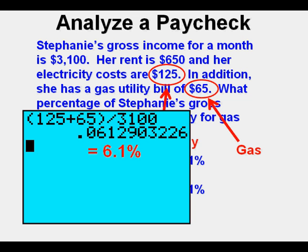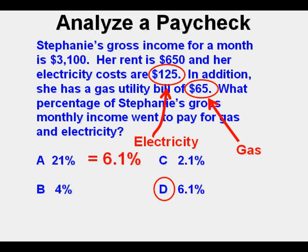Press enter. We get .061, which equals about 6.1% — and that's answer choice D, our correct answer.